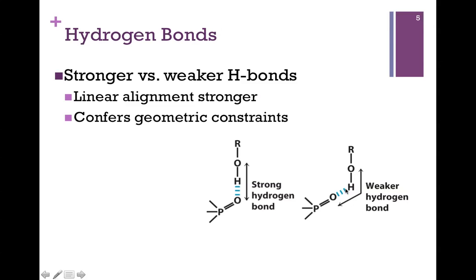In the figure on the right, however, the alignment is not strictly linear, and so in that case the overlap is slightly less, and so it represents a weaker hydrogen bond.